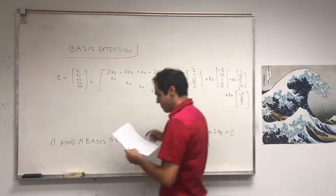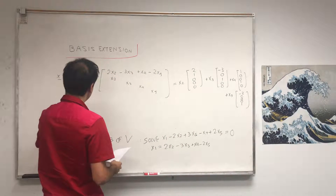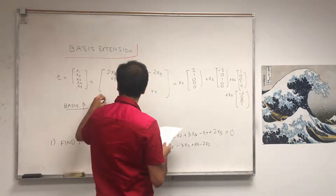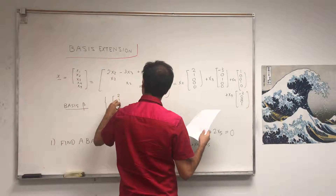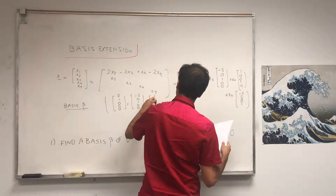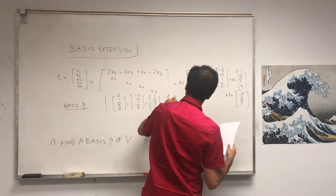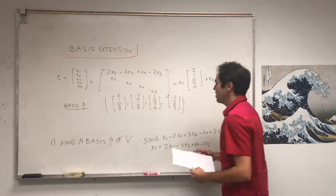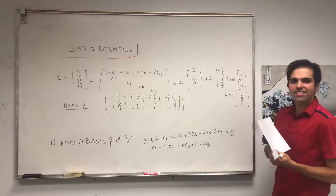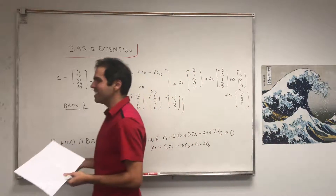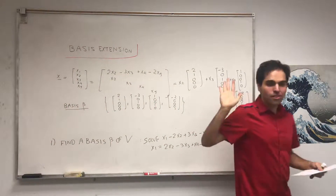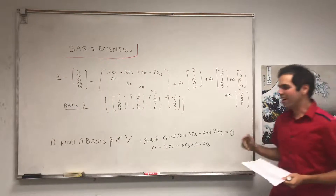So our basis beta of V consists of the four vectors: (2, 1, 0, 0, 0), (-3, 0, 1, 0, 0), (1, 0, 0, 1, 0), and (-2, 0, 0, 0, 1). Because V is a null space, this set is automatically linearly independent — you can watch another video for that proof. This is a valid basis, but it's not our final answer, since we need a basis that contains S.